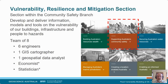Looking at the Vulnerability, Resilience and Mitigation section, we reside within the Community Safety Branch, so Lisa is our branch head. You can see where we sit in GA's sort of research areas — we're clearly supporting Australia's community safety. We're a team of eight at the moment: six engineers including our director, Mark Edwards, a GIS cartographer and a GIS spatial data analyst, and a couple of others who were recently staff members — our economist and statistician who've contributed a lot to this work.